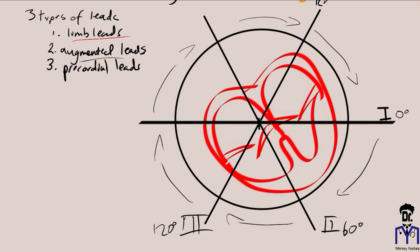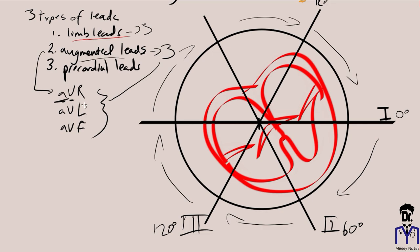Goldberger's leads, also known as augmented leads, are AVR, AVL, and AVF — just like we had three limb leads, we have three augmented leads. 'A' stands for augmented, 'V' for voltage, 'R' for right, 'L' for left, and 'F' for foot.